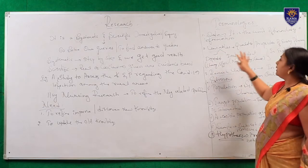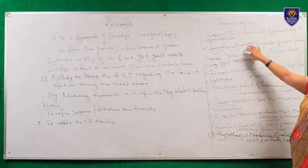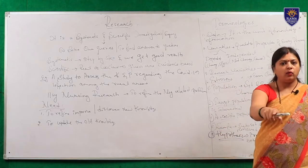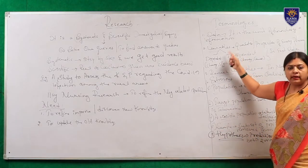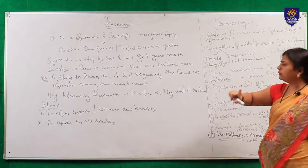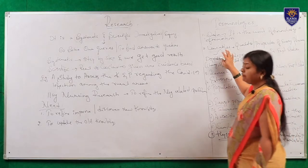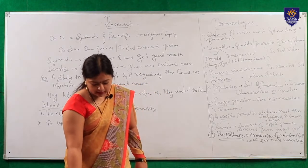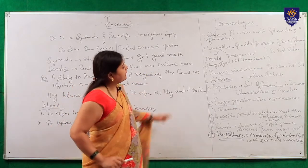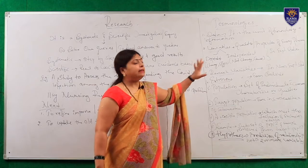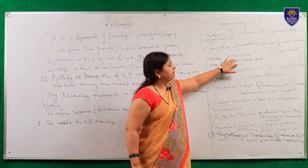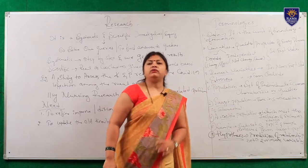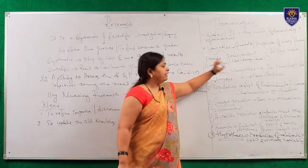Next comes variables. What are variables? Variables are defined as the qualities or the properties of every phenomenon. In every phenomenon there are certain properties or certain qualities - those are known as variables. Now we are classifying variables into two types. The first is the independent variable and the other is the dependent variable. These dependent and independent variables are specially used in experimental studies.